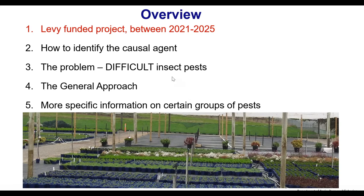As an overview for this webinar, we're going to briefly talk about the project it falls under, how to identify your causal agent and why that's important, describe our difficult insect pests, and then have a general approach to manage them. We have a few case studies with specific information on certain groups. We can't cover everything, but hopefully you'll get an idea of the general approach. There are no silver bullets — certain pest species can be quite difficult, but hopefully you'll get something out of this to manage them better.